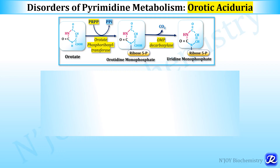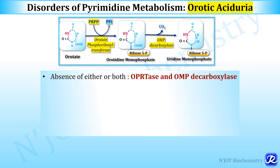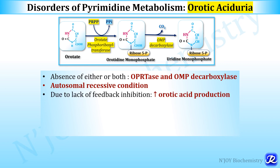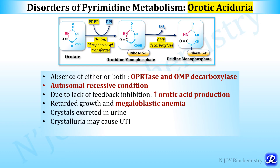Orotic aciduria is caused by absence of either or both enzymes orotate phosphoribosyl transferase and OMP decarboxylase. It is an autosomal recessive condition; due to lack of feedback inhibition there is increased orotic acid production, retarded growth, and megaloblastic anemia from defective DNA synthesis. Crystals excreted in urine may cause urinary tract infection. Treatment involves feeding cytidine or uridine, which provide pyrimidine nucleotides and allow UTP to inhibit CPS2, blocking further orotic acid synthesis.